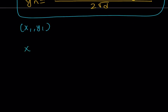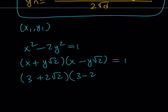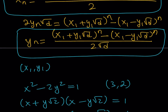For example, x squared minus 2y squared equals 1. Factoring, I get (x plus y√2)(x minus y√2) equals 1. Thinking about two integers x and y whose product gives 1 — note that 9 minus 8 equals 1, so we can write (3 plus 2√2)(3 minus 2√2) equals 1. This shows that (3, 2) is actually a solution to this equation. Since 2 and 3 are both prime numbers, this is the solution discussed in the previous video.